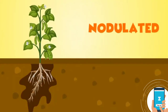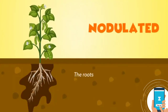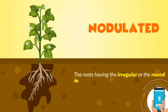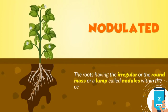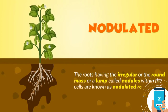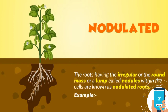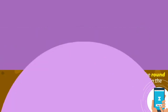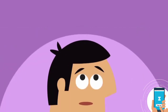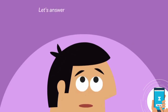Nodulated: the roots having an irregular or round mass or lump called nodules within the cells are known as nodulated roots. These were all the modifications of the root.